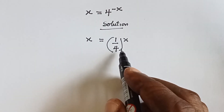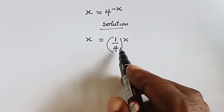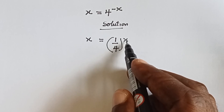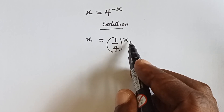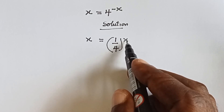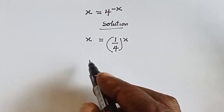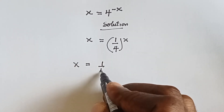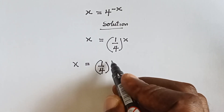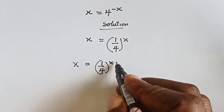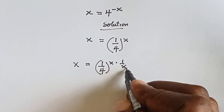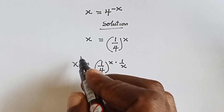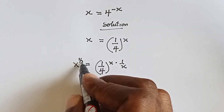So this can be written as this. From there, how do we cancel this x? If we multiply this power by 1 over x, it's going to cancel out. So write x equals to 1 over 4 raised to power x, then multiply by 1 over x. Because we have multiplied this by 1 over x, we have to also multiply this by 1 over x.